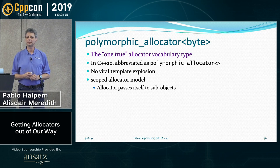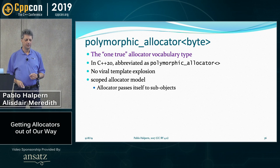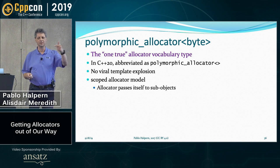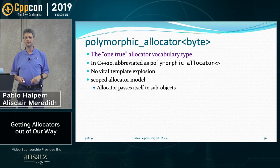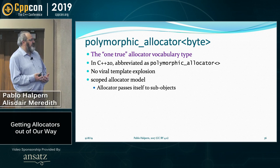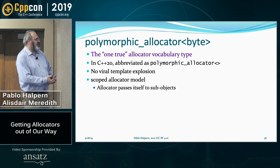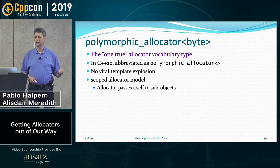polymorphic_allocator<byte> is a little bit special in C++20 — we call it the one true allocator vocabulary type. When in doubt, use polymorphic_allocator<byte>. In C++20, we've made byte optional so you can just use the little diamond to name it. It doesn't produce the viral template explosion that using normal allocators does. You just pass one of these things around, and it uses the scoped allocator model — all polymorphic allocators pass themselves down to member objects. The only reason polymorphic_allocator is a template is for backwards compatibility with C++11 allocator_traits, which requires it to be a template just to do the rebind. If you are writing new code using allocators, you don't have to use any of the template stuff — just use polymorphic_allocator<byte>.